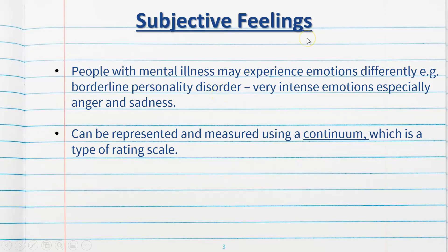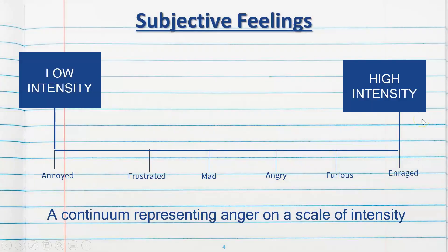Subjective feelings, or the intensity of them, are often represented and measured using a continuum — in other words, a type of rating scale. Here's the example we went through in class, just going over again for revision purposes. This is the basic emotion of anger. Often it's not enough to just describe someone as feeling angry — we need to look at the intensity of their anger in order to be accurate in our diagnosis and observations. Here we can see the intensity of anger from low intensity to high intensity, represented as a continuum or scale.